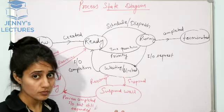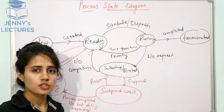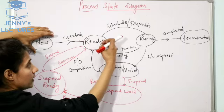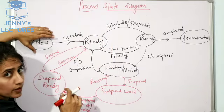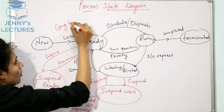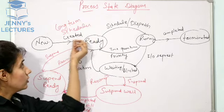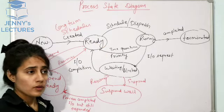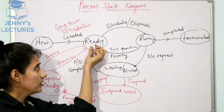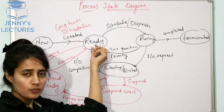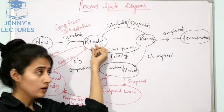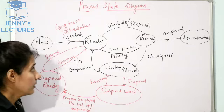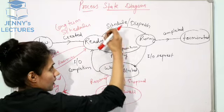Now let's discuss the three types of schedulers: long-term scheduler, short-term scheduler, and medium-term scheduler. From the new state, processes are picked and put into the ready state — this is done by the long-term scheduler. The long-term scheduler also decides the degree of multiprogramming, which is the maximum number of processes that can reside in the ready state at one time. For example, if 50 processes can reside in the ready state, the degree of multiprogramming is 50.